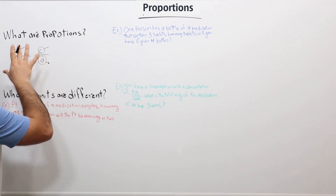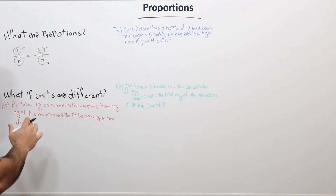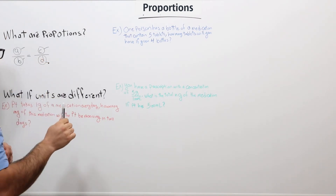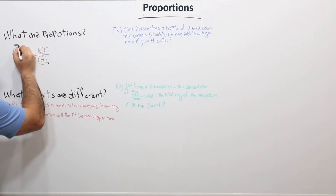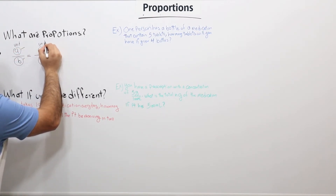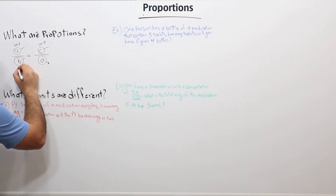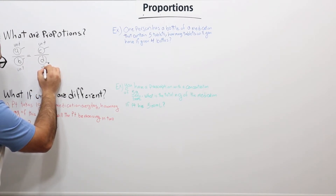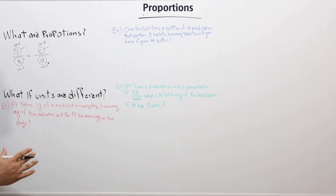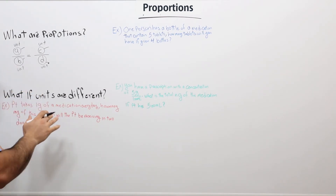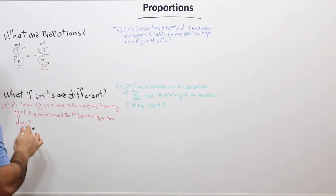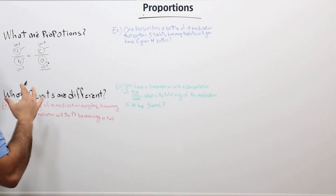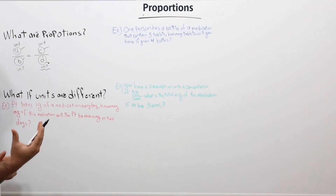There are certain conditions. Number one: the units on the top of the fractions must match, so the unit for A must match the unit for C. The same applies to the bottom — the unit for B must match the unit for D. In addition, there must be only one unknown factor. Here we only have D as the unknown.